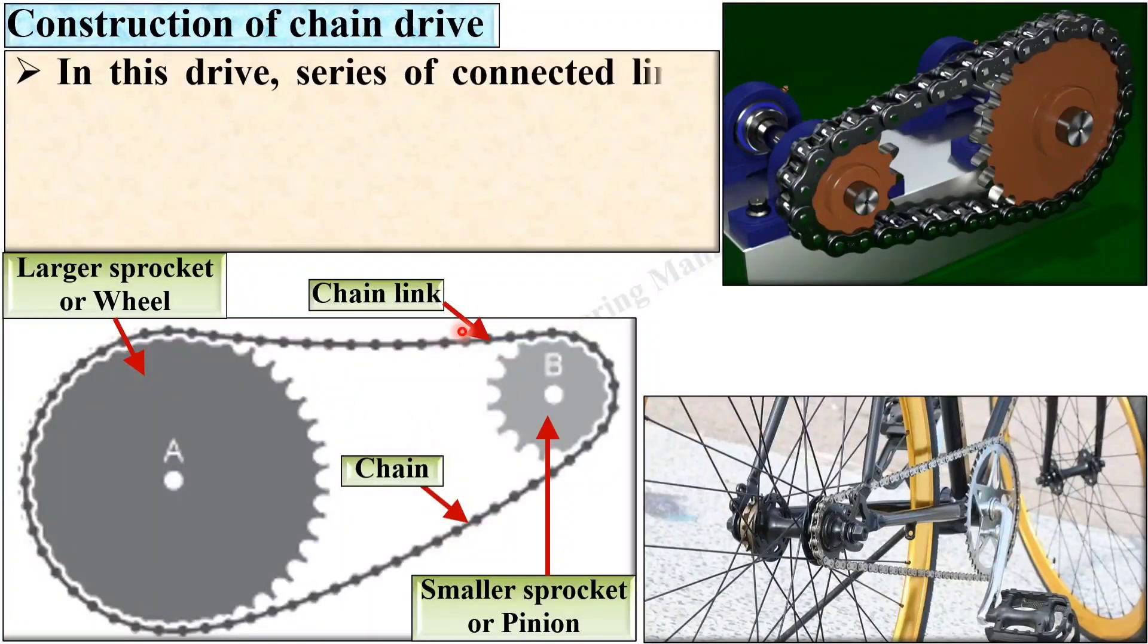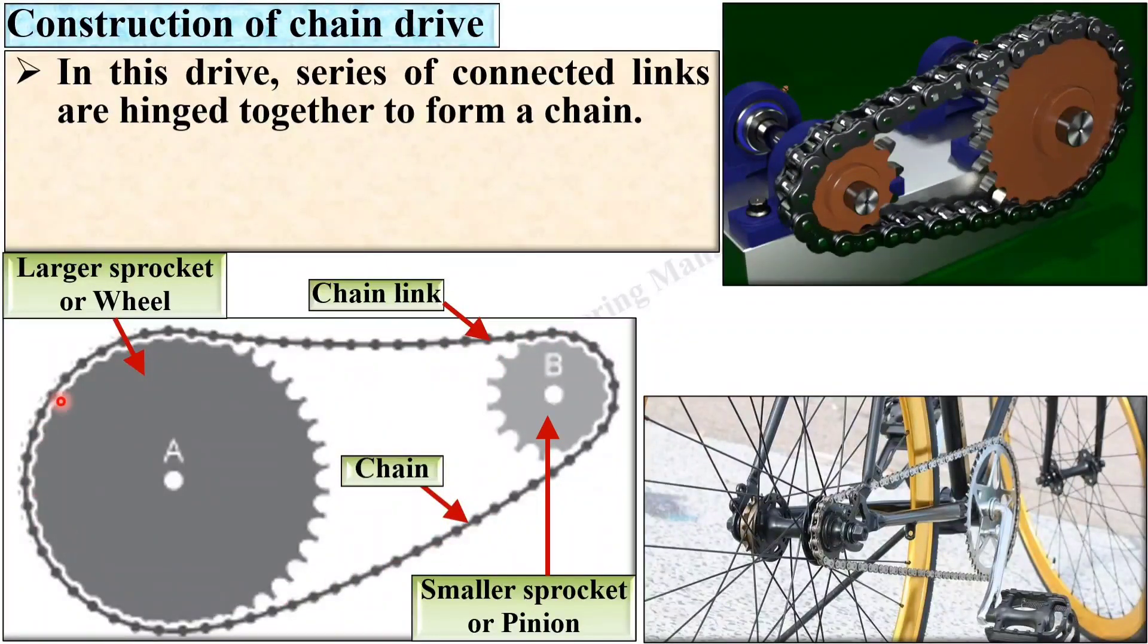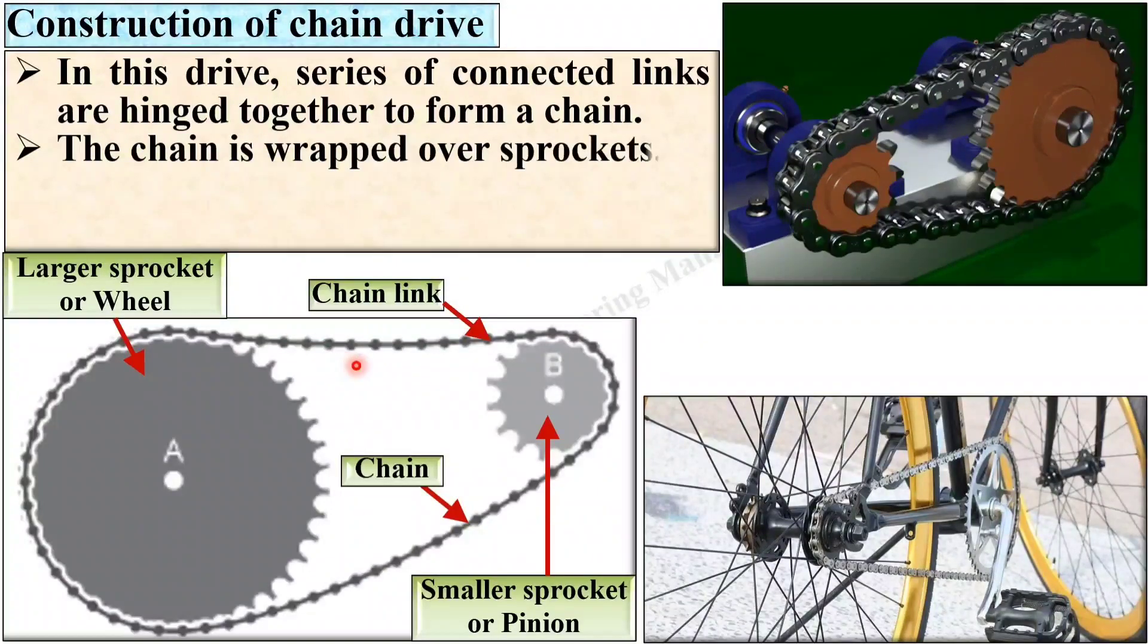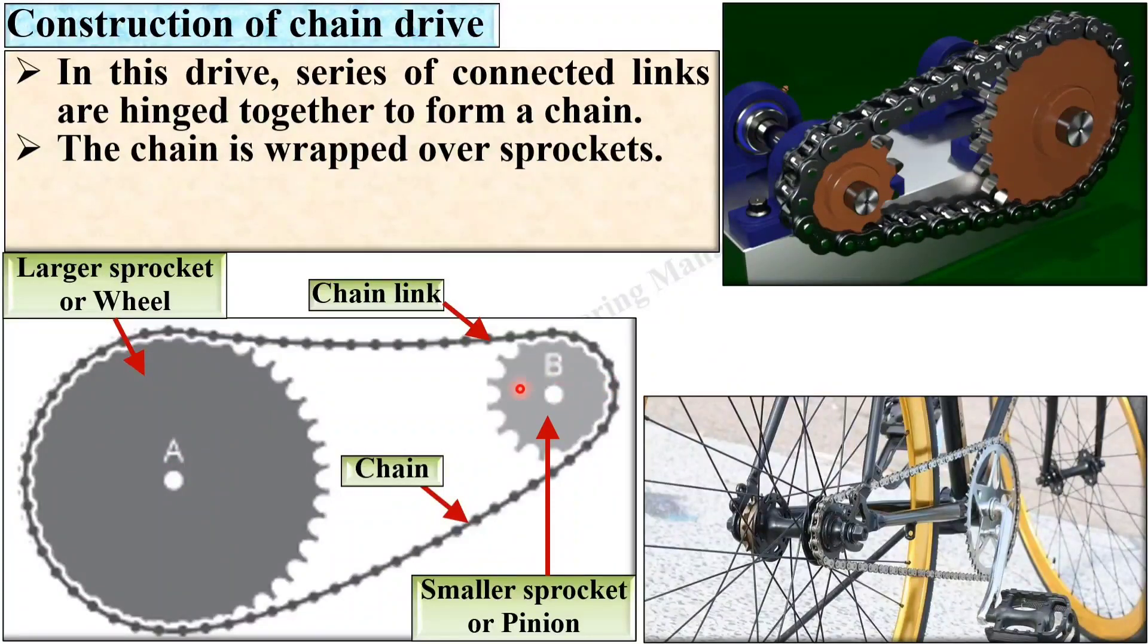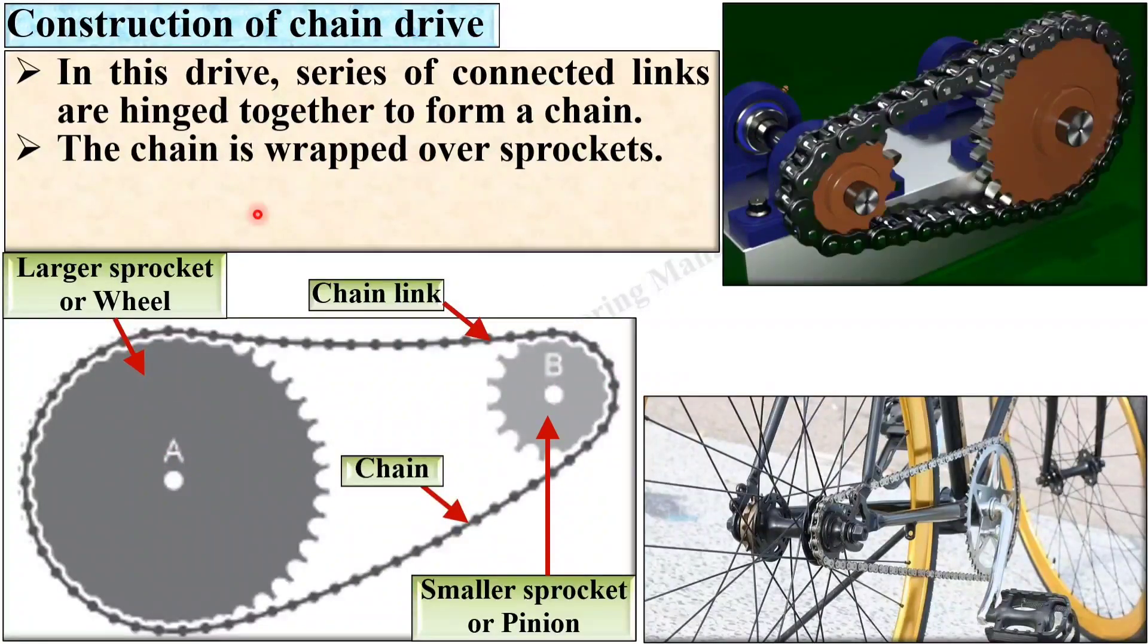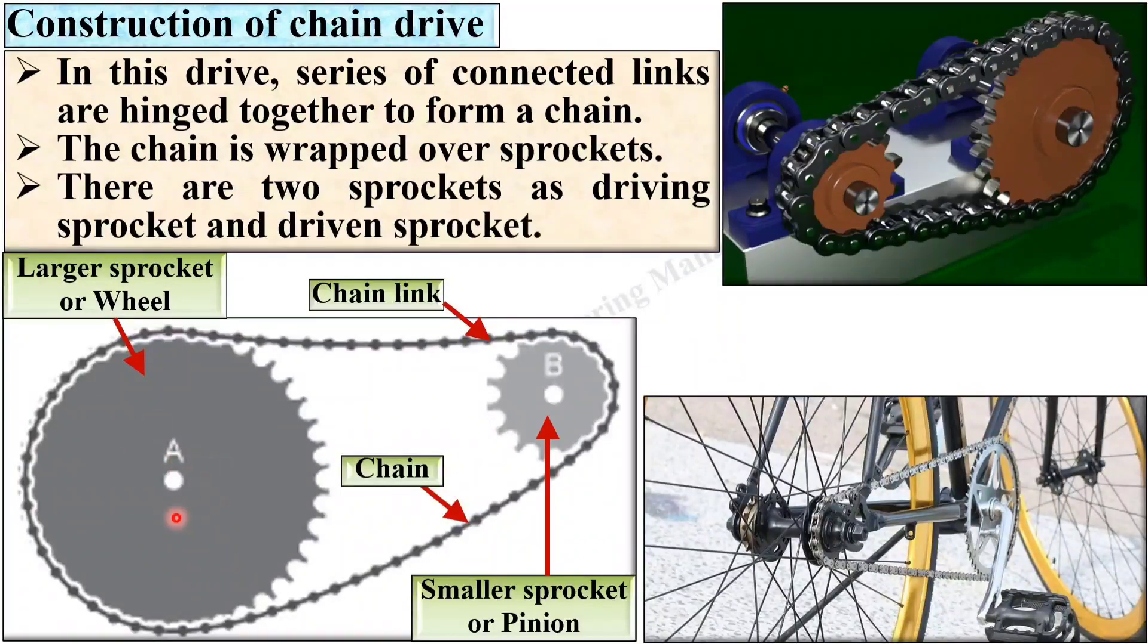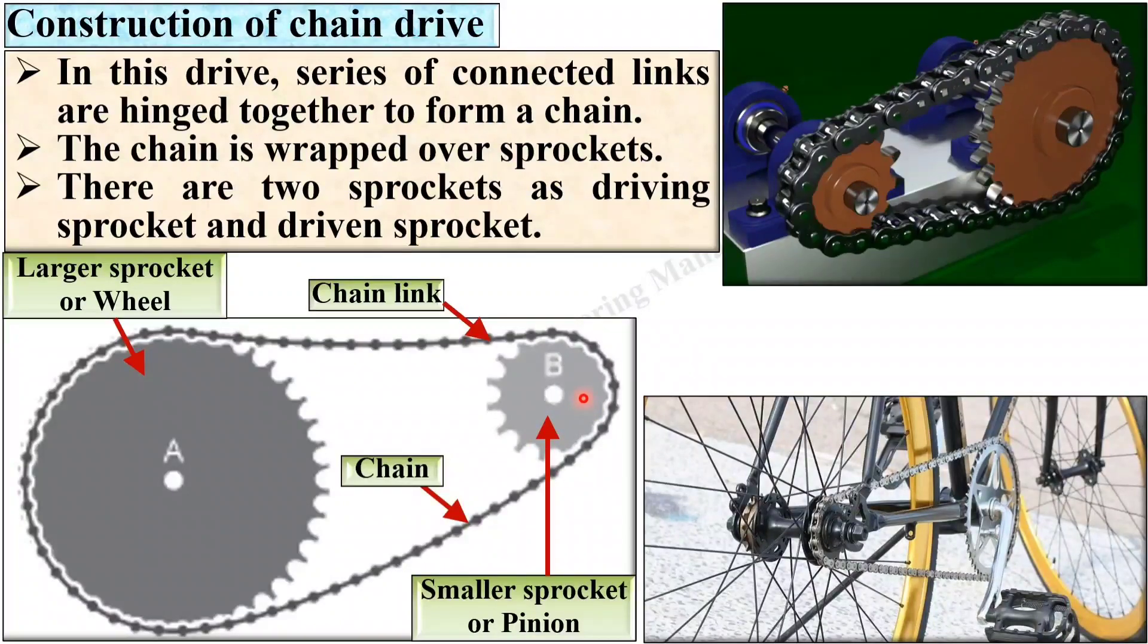In this drive, a series of connected links are hinged together to form a chain. The chain is wrapped over these sprockets. Here you can see A and B, both are the sprockets. There are two sprockets. This one is known as the driving sprocket and this one is known as the driven sprocket.